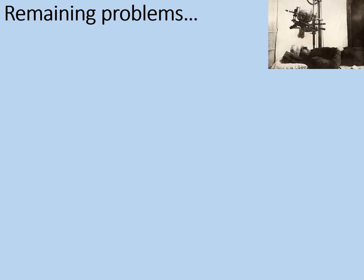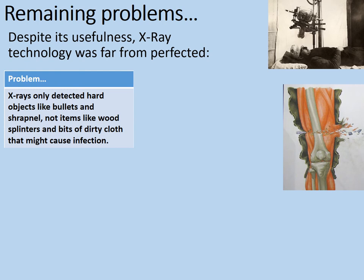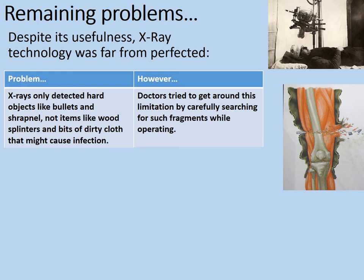But there are still some remaining problems. Despite its usefulness, x-ray technology was far from perfected. First problem: x-rays only detected hard objects like bullets and shrapnel, not items like wood, splinters, and bits of dirty cloth that might cause infection. Remember the problem of bullets and shrapnel taking bits of uniforms and mud inside wounds. However, doctors tried to get around this by carefully searching for such fragments while operating — at least an x-ray might help narrow down the area to search.